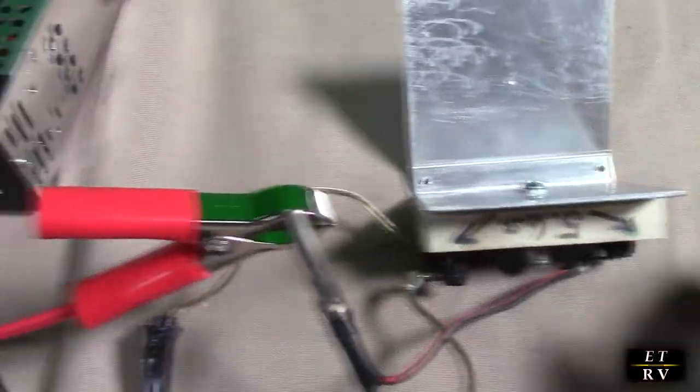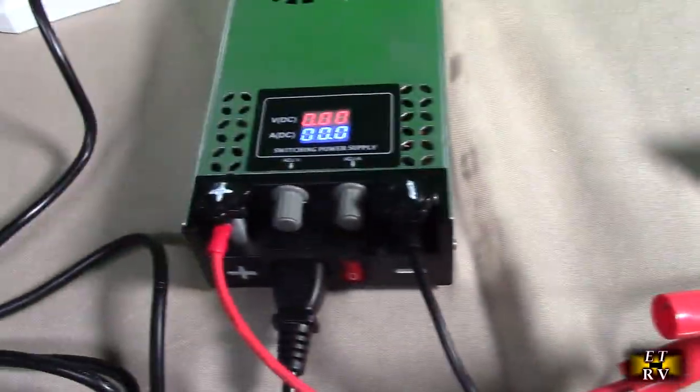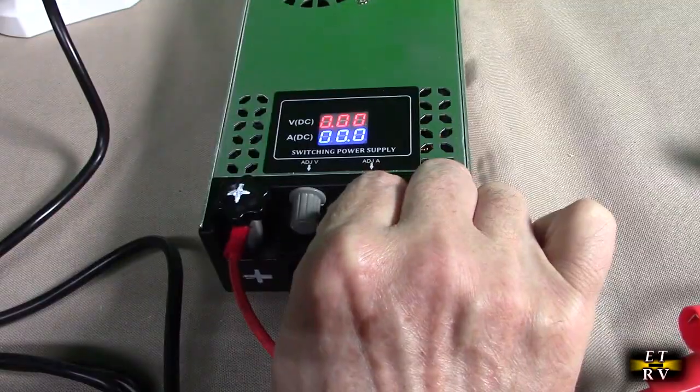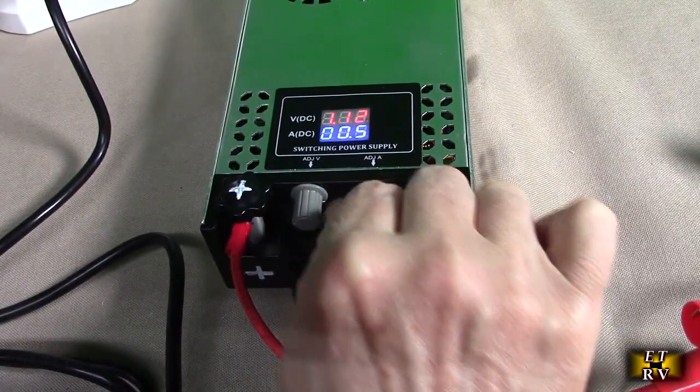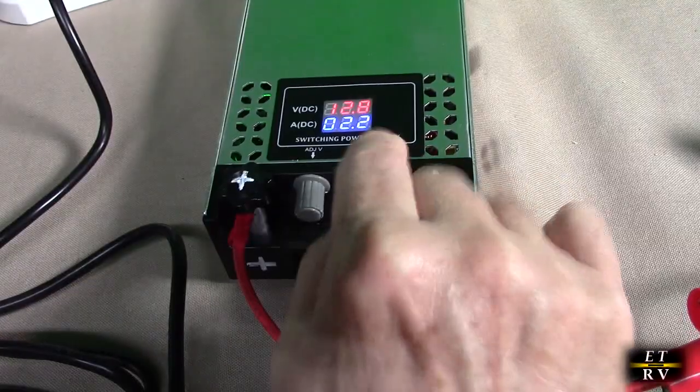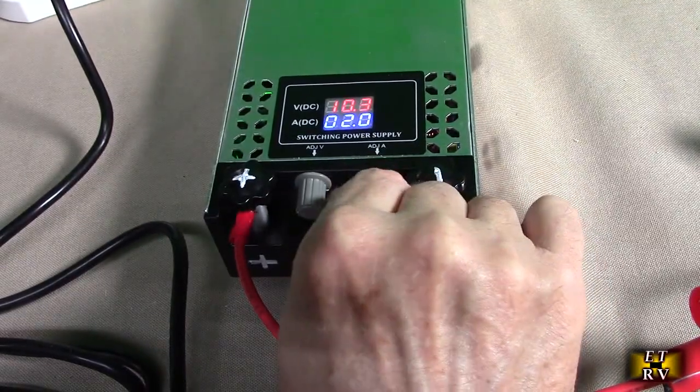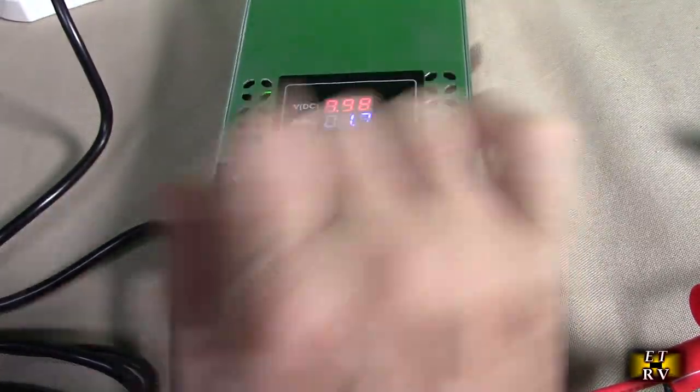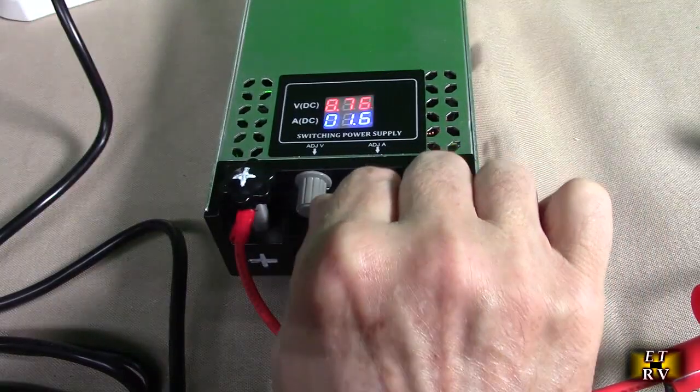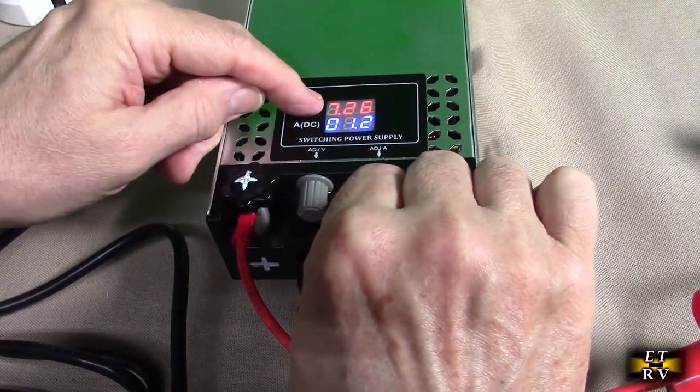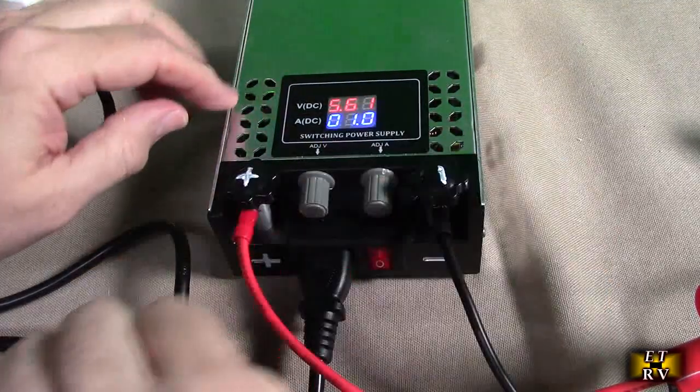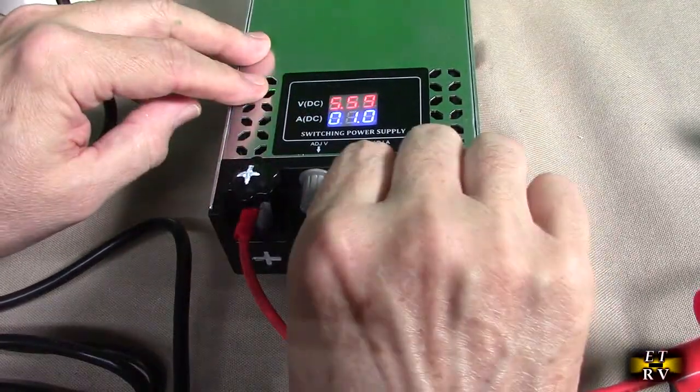I've been testing the power supply out with that load and I've got the current adjusted way down. I'm going to increase that current. Right now I have the voltage pretty high. I can slowly increase that current. You notice that the voltage drops as I adjust. It's in constant current mode, keeping that current at about an amp.